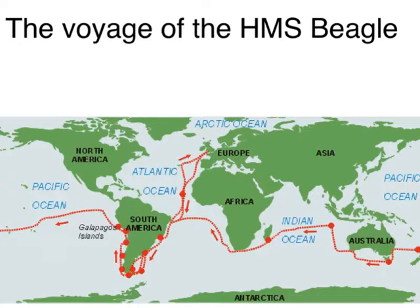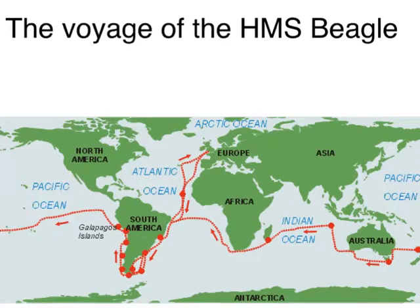So where did Darwin get his ideas from? He was a naturalist who was assigned to a ship called the HMS Beagle — HMS stands for His Majesty's Ship. He was one of the scientists assigned to this ship, and this was the voyage they took. They started off in the UK, came down along South Africa, went under South Africa, and came back up to the Galapagos Islands.